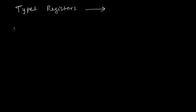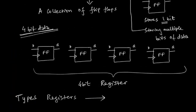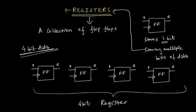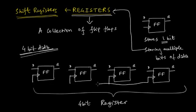The very first type is the serial in and serial out register. The registers we are talking about are also referred to as shift registers, because the data in them shifts from one flip-flop into the other whenever we input or output data serially. All the registers we'll look at have a common clock line.